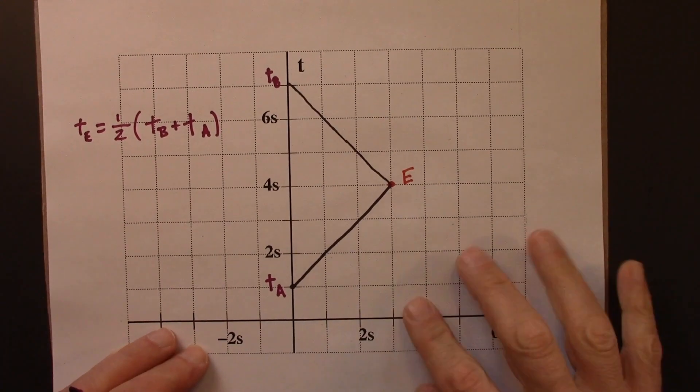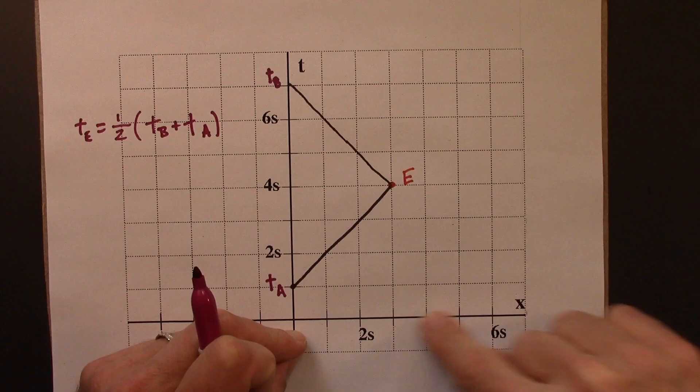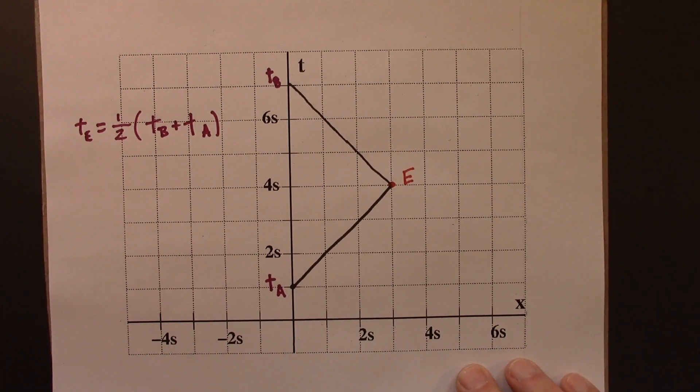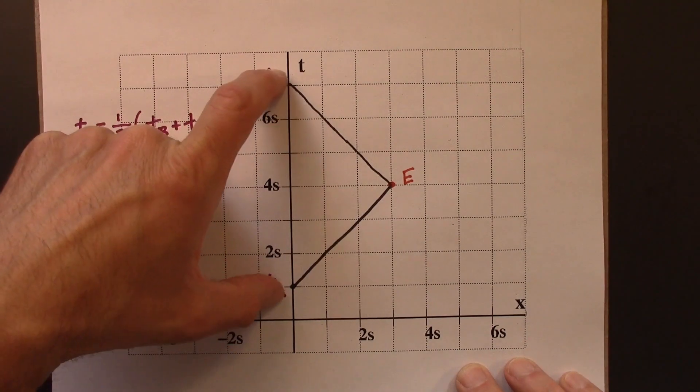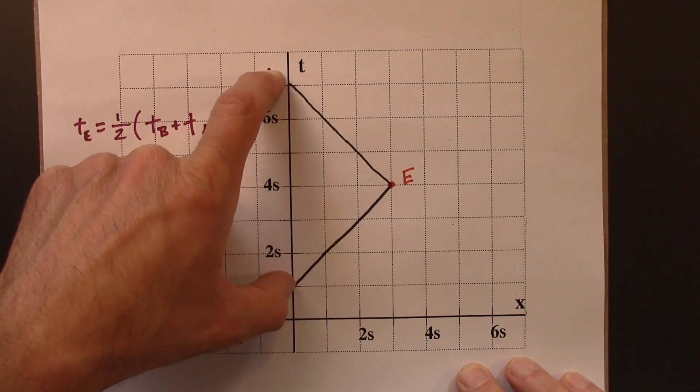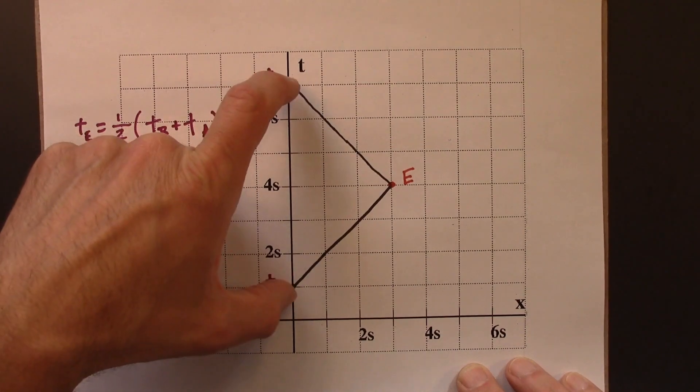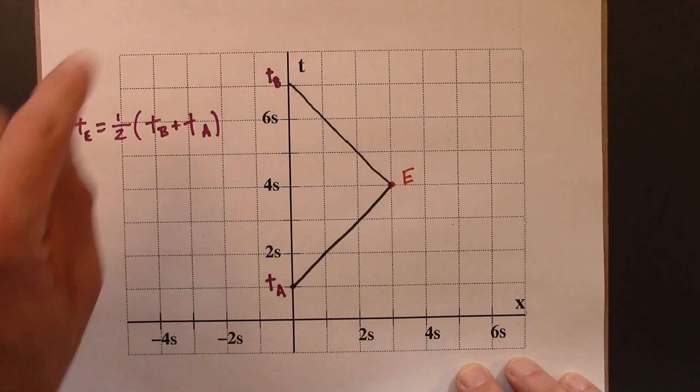Then we would also want to know, well, what about the X coordinate? What would that value be? The X coordinate is going to be, let's see how to think about that. I want to figure out this length and then take half of it.